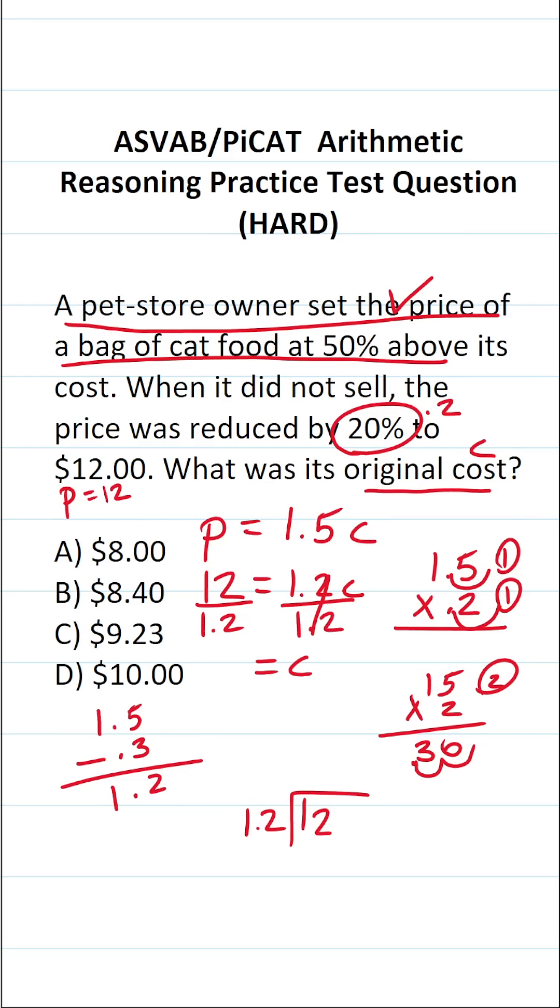I know many of you could do that part mentally, but you can't do long division with the decimal outside the division bracket. You have to move it one time to the right. At the same time, you have to move the decimal in 12 a corresponding number of times to the right and add a zero placeholder. This is rewritten as 120 divided by 12, which is 10. 10 times 12 is exactly 120. So the original cost of the bag of cat food is $10.